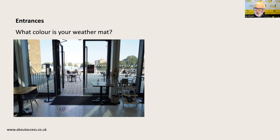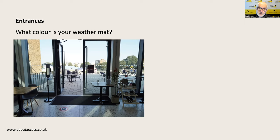Has anybody thought about the colour of your weather mat? Here we've got a café with an outdoor seating area and a dark weather mat. Somebody with a cognitive impairment — perhaps following a stroke, brain injury, or dementia — or somebody visually impaired may perceive that dark weather mat as a change in level or a hole. We need to provide weather mats with similar tonal contrast to the flooring they're laid on. The same applies to lifts — we don't want lifts with a dark floor, because visually impaired people or those with cognitive impairments might perceive it as an open lift shaft.